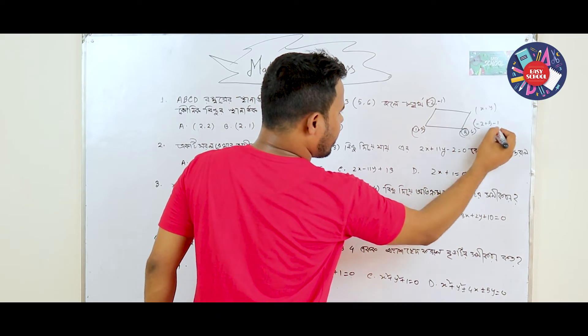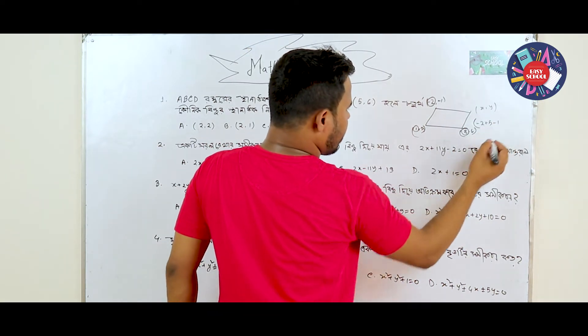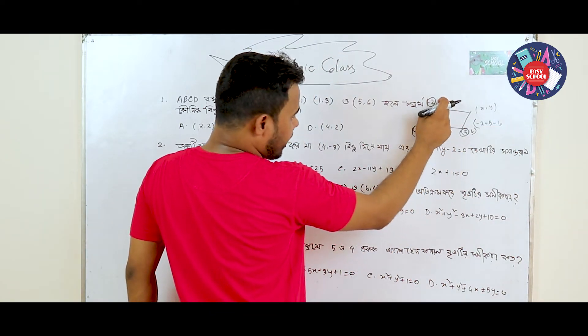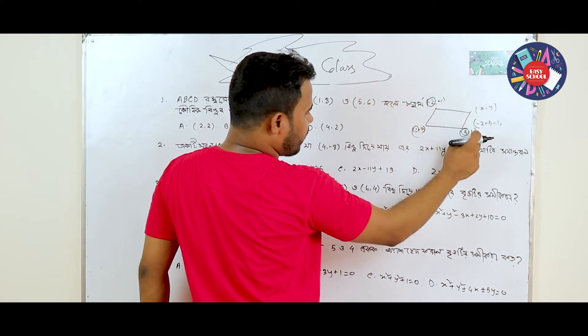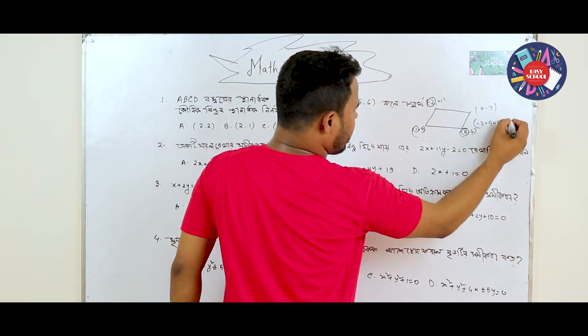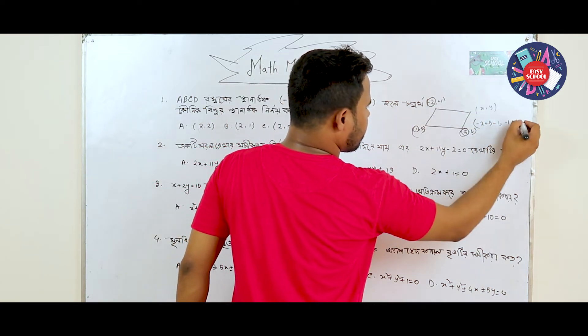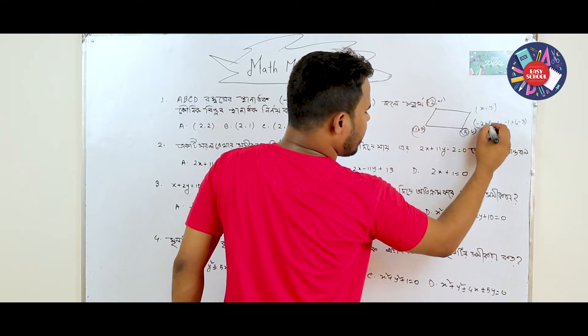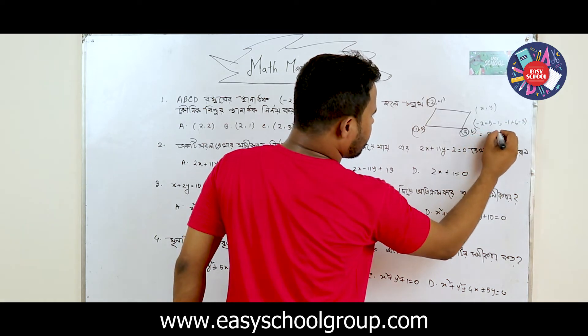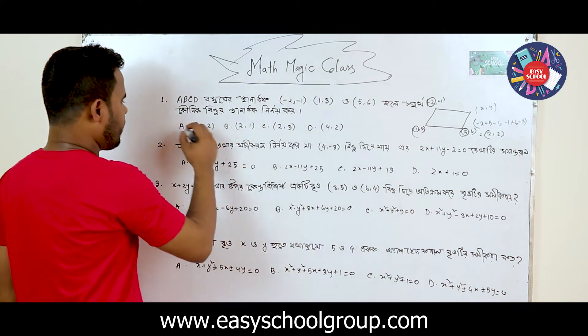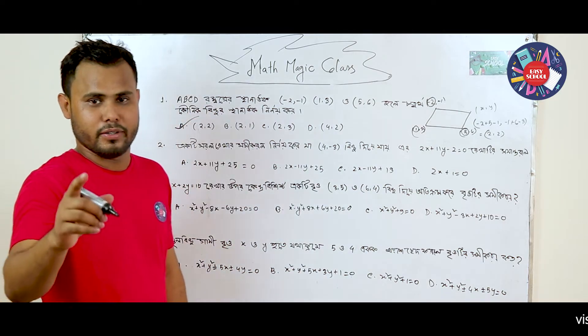Okay. Minus 1 plus 6 minus 3. So we have a 2 and a 2. We have a 4 and a 2.